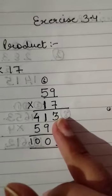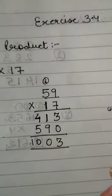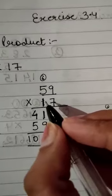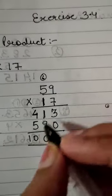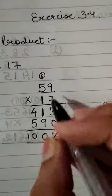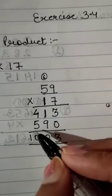Okay. Now at the tens place, 1 multiplied by 59. When 1 gets multiplied with 59, it will be 59. 1 nine is 9 and 1 five is 5.